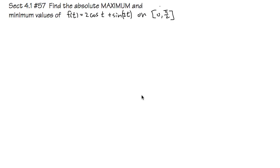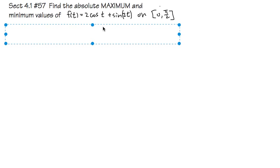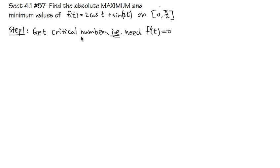This is problem 4.1 number 57. We are going to find the absolute maximum and minimum values for the function 2cos(t) + sin(2t) on the interval [0, π/2]. To do this, we have to find the critical numbers, which means we set the derivative equal to 0.